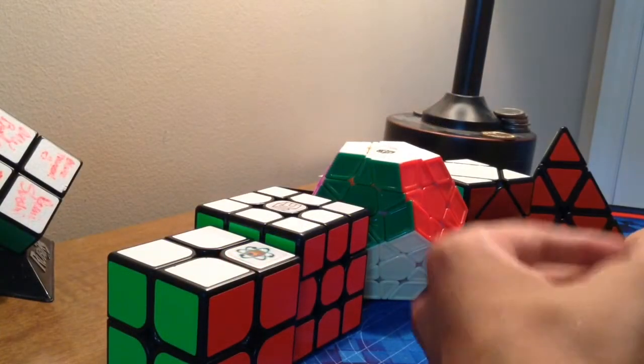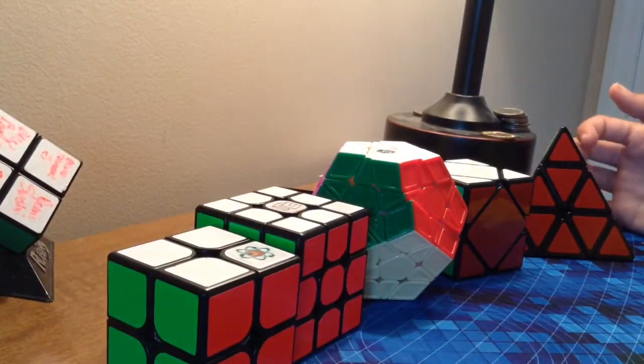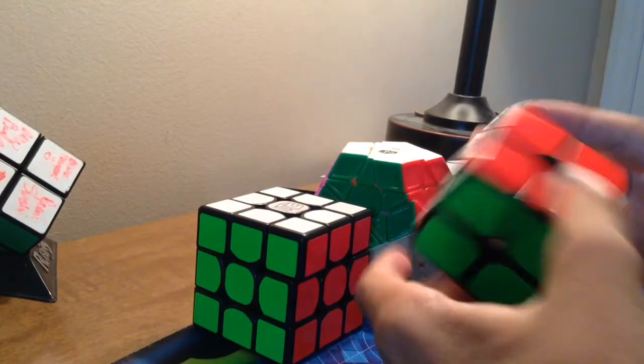Daniel here from Lazy Cubers. And now I'm going to be talking about my mains and goals for U.S. Nationals 2017. So first let's start with 2x2.